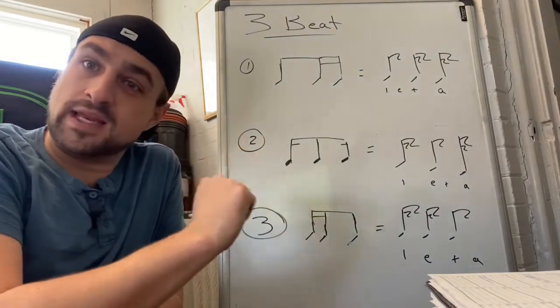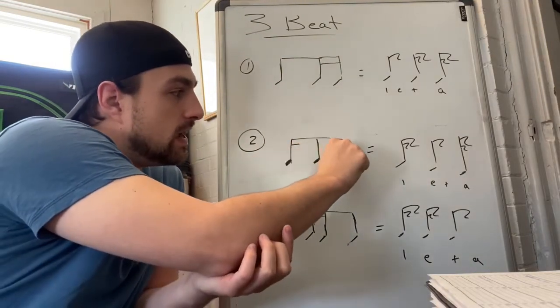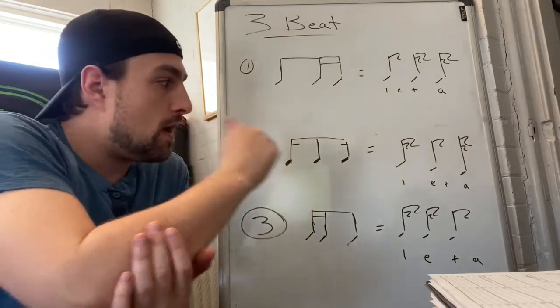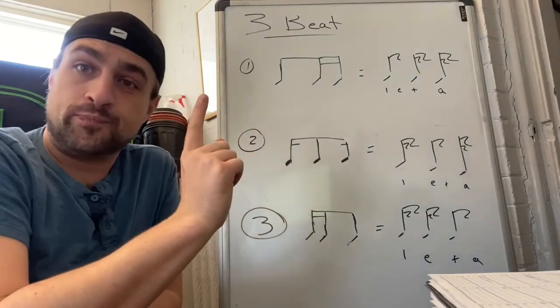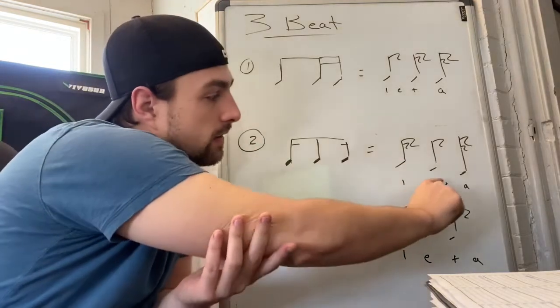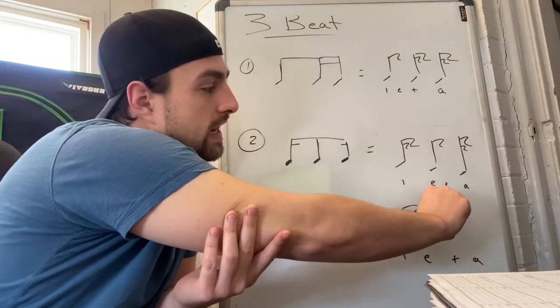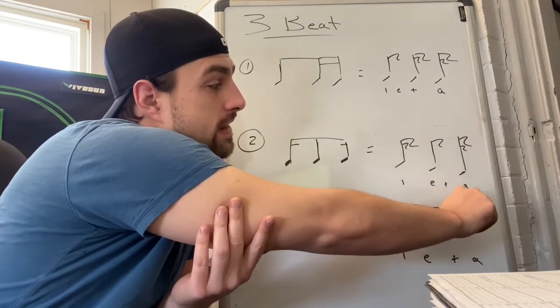This is splitting up the two sixteenth notes. As you can see, they have the second flag here and a second flag there, but the middle one only has one. So the hold of the note will be in the middle here. You'll get one hit on one, you'll hold for e and and, and then you'll play again on ah.